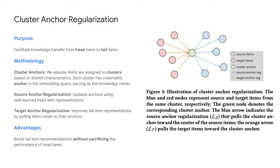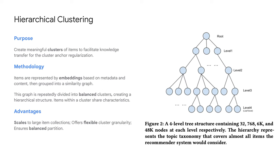We improve tail item representations by pulling them towards their corresponding anchors. By doing so, we can improve the performance of tail items without sacrificing the performance of the head items. In this work, we adopted a hierarchical clustering idea, which is scalable, flexible, and also ensures balanced partitions.